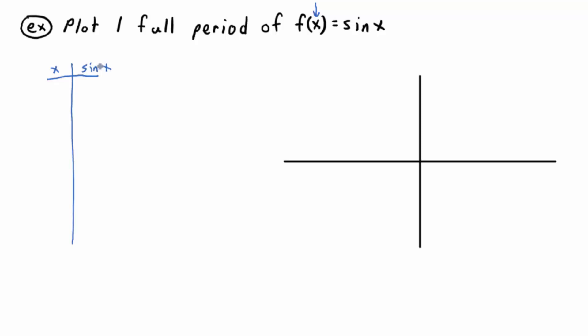We have x for the input and sine of x for the output. That's what a function is: inputs and outputs, ordered pairs if you like. I'm not going to plot all the values, just enough to get an idea what this looks like. I'm going to plot zero radians—we're in radians here when we plot on the Cartesian plane. This is going to be the x-axis, this is going to be the y-axis.